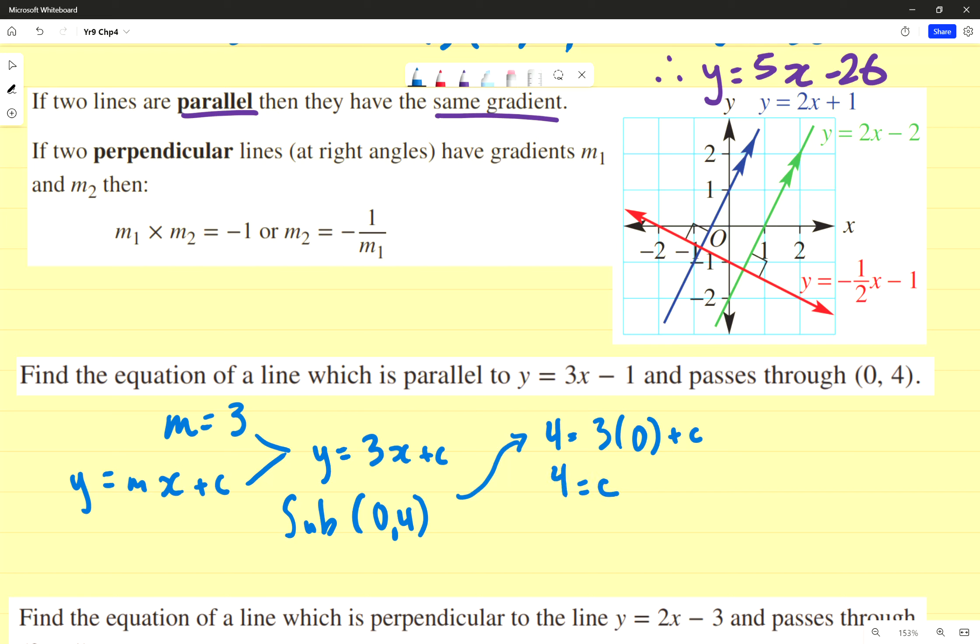That means 4 equals c. And just like before, I'm writing the equation, not finding the value of c. So I rewrite the whole thing. And I get, therefore, y equals 3x plus 4. I'm going to start using that therefore sign a lot more now, just give me a heads up. So that's pretty much identical to what we did before. The only additional step was to say that it's parallel so the gradient is the same. That's the only additional step. Are there any questions about that one for those of us following along?